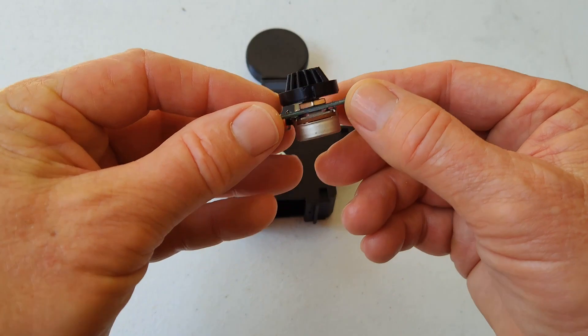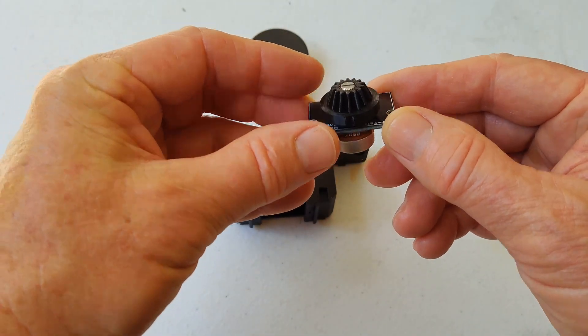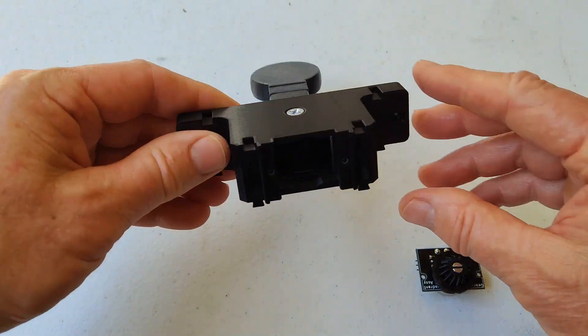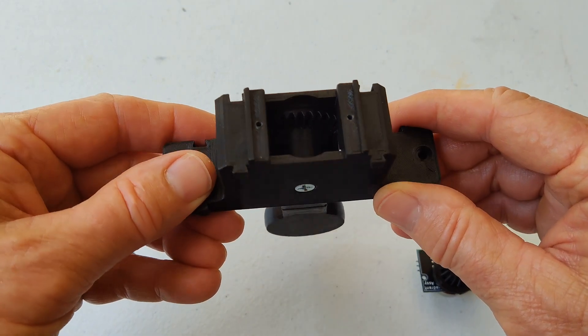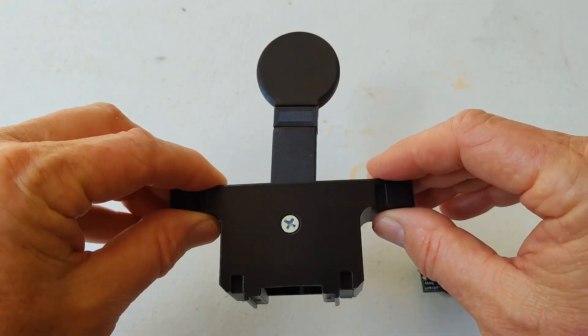I've removed the screws and this is what it looks like with the gear on it. And then on the inside here, I think you can see the teeth that goes to the lever gear.